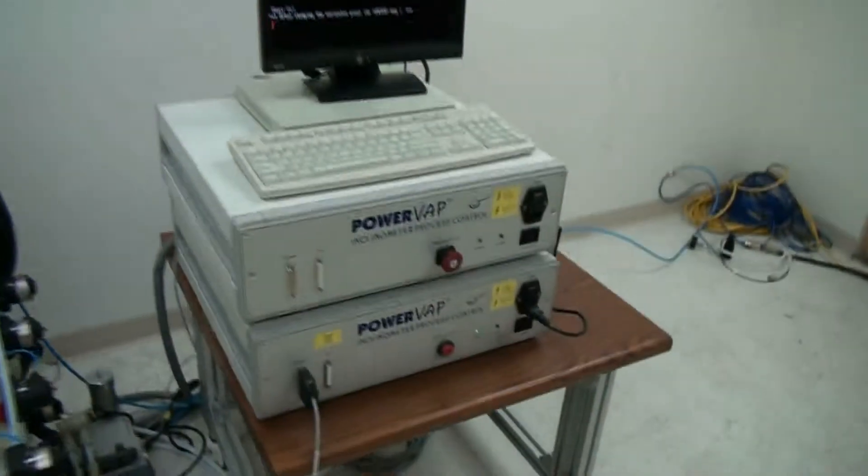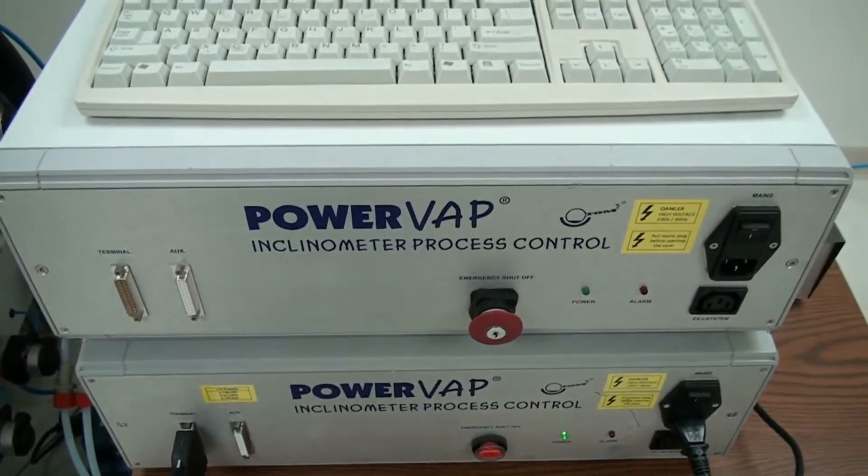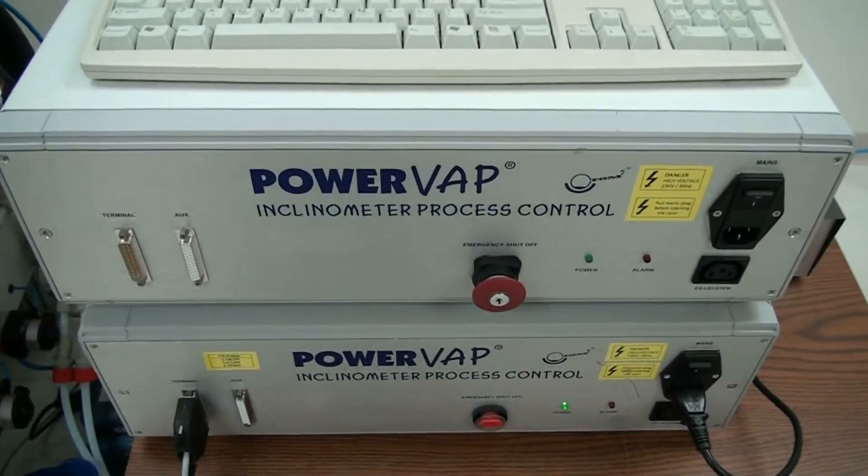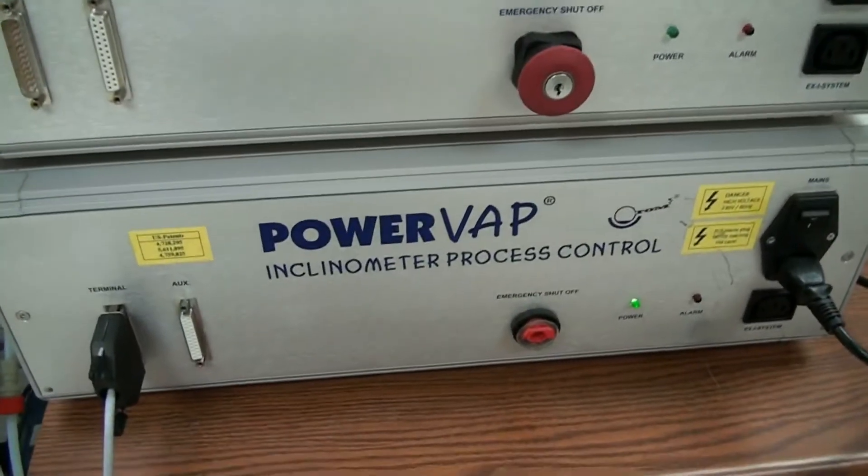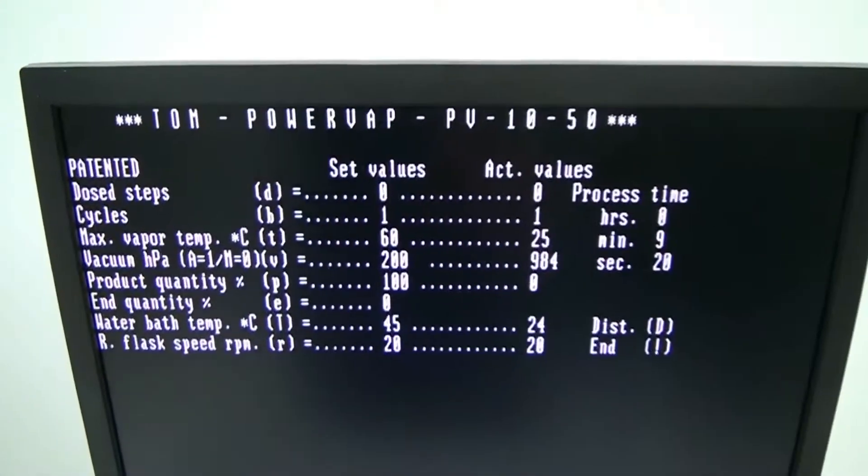Once you set your parameters on the control panel over here, we actually have an extra control panel that we're giving with this just for parts in case you need any parts off of it. The bottom one is the one we're actually running on this system. You can see in the screen here all the parameters that are set right now.